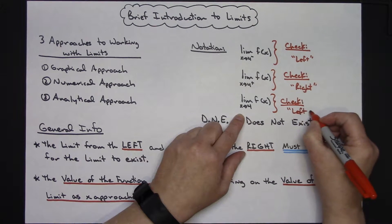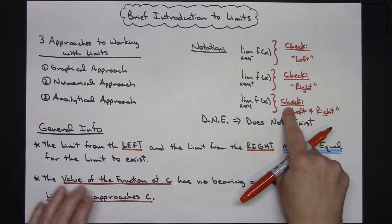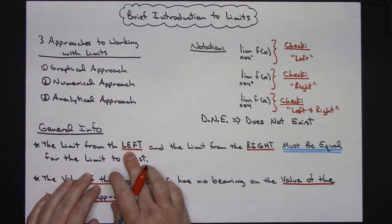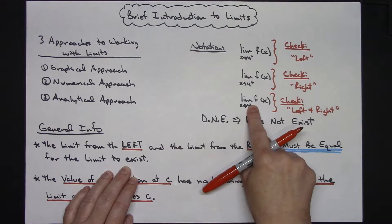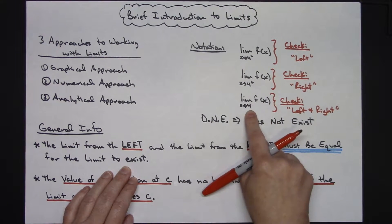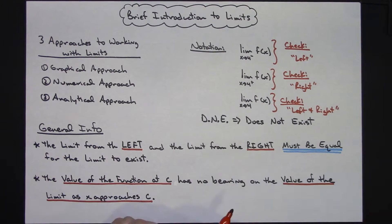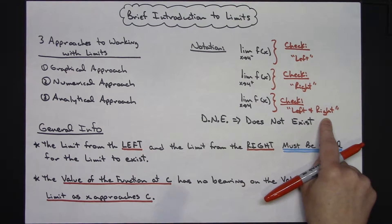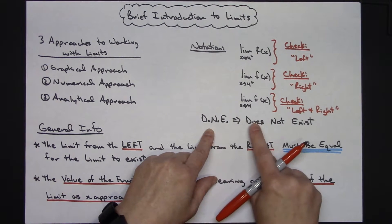We check it from the left and from the right. The limit from the left and the limit from the right must be equal for the limit to exist. If they don't indicate a one-sided limit, you check from the left, check from the right, and those two values must be equal. Otherwise the limit does not exist — you'll often see DNE, which means does not exist.